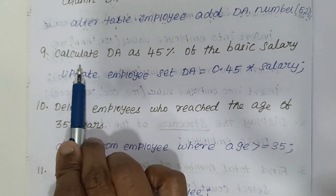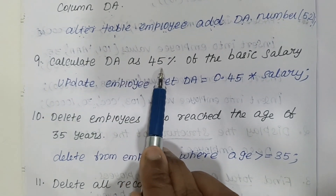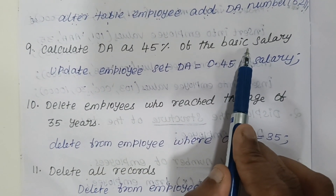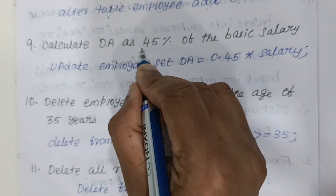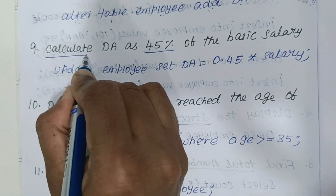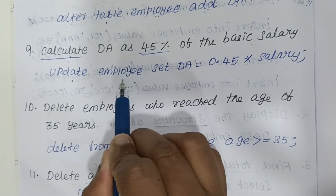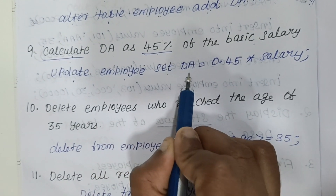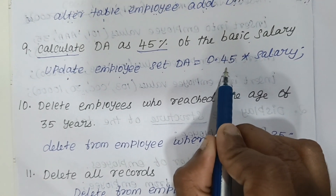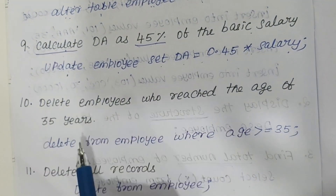To calculate DA as 45% of the basic salary: 'calculate' means you use UPDATE. Write UPDATE employee SET da = 0.45 * salary, then semicolon. 45 percentage is expressed as 0.45 multiplied by salary.